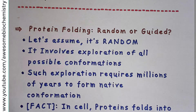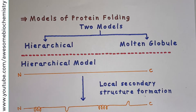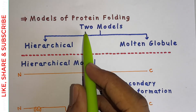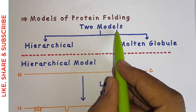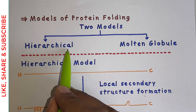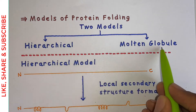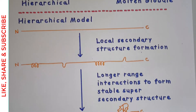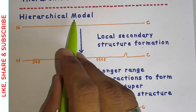Moving to the next point — models of protein folding. Basically, two different models are suggested for protein folding: one is the hierarchical model, and the second is the molten globule model. Let's first discuss the hierarchical model.